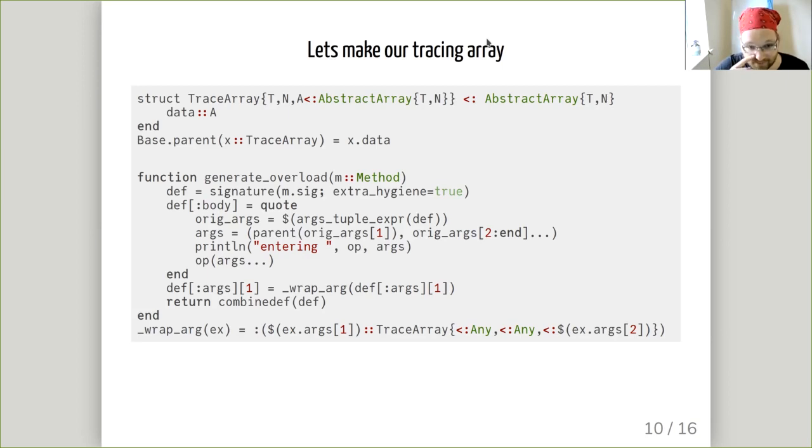Here's our generate overload. It's taking a signature. I'm using the variant signature that takes in a type tuple from the method's m.sig field. It's adding a body which is going to start with the original arguments that are passed in the function. It's going to call parent on the first one to get back to the plain array behind it. And it's going to print out entering and the arguments. One of the things signature does is it names the function op, so you can use that in an expression. Finally, it's going to modify the arguments to change the type constraints so that it takes a trace array instead of taking the original array type before calling combineddef to actually give us the method.